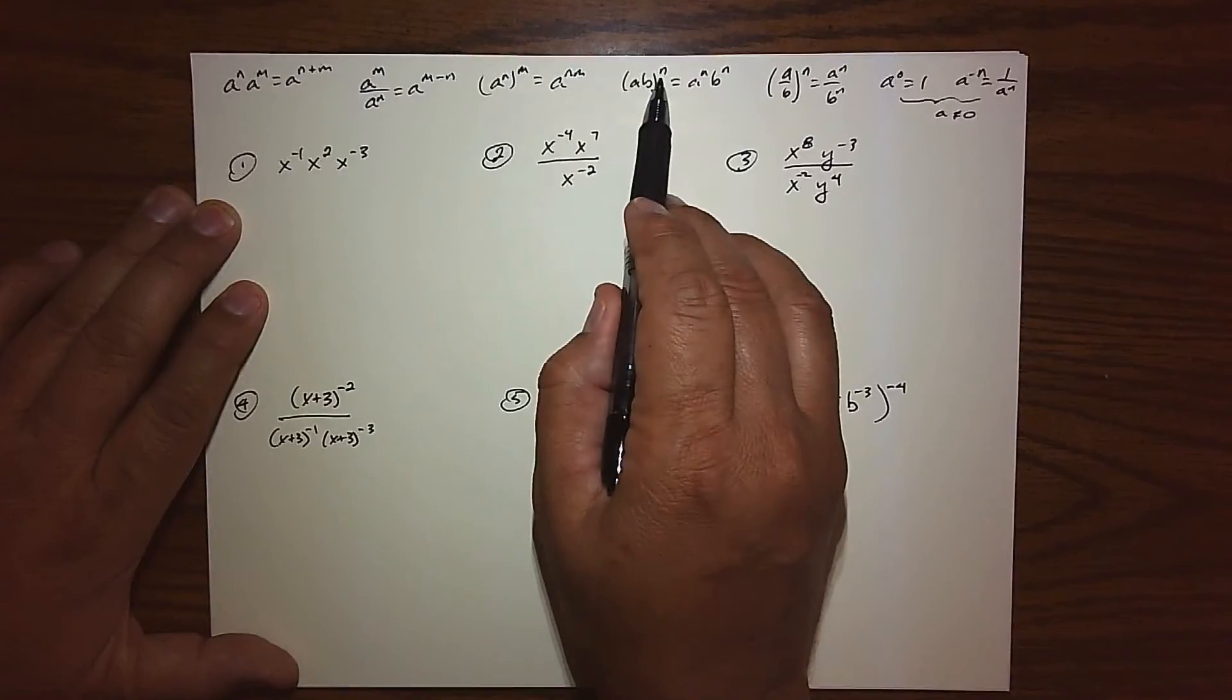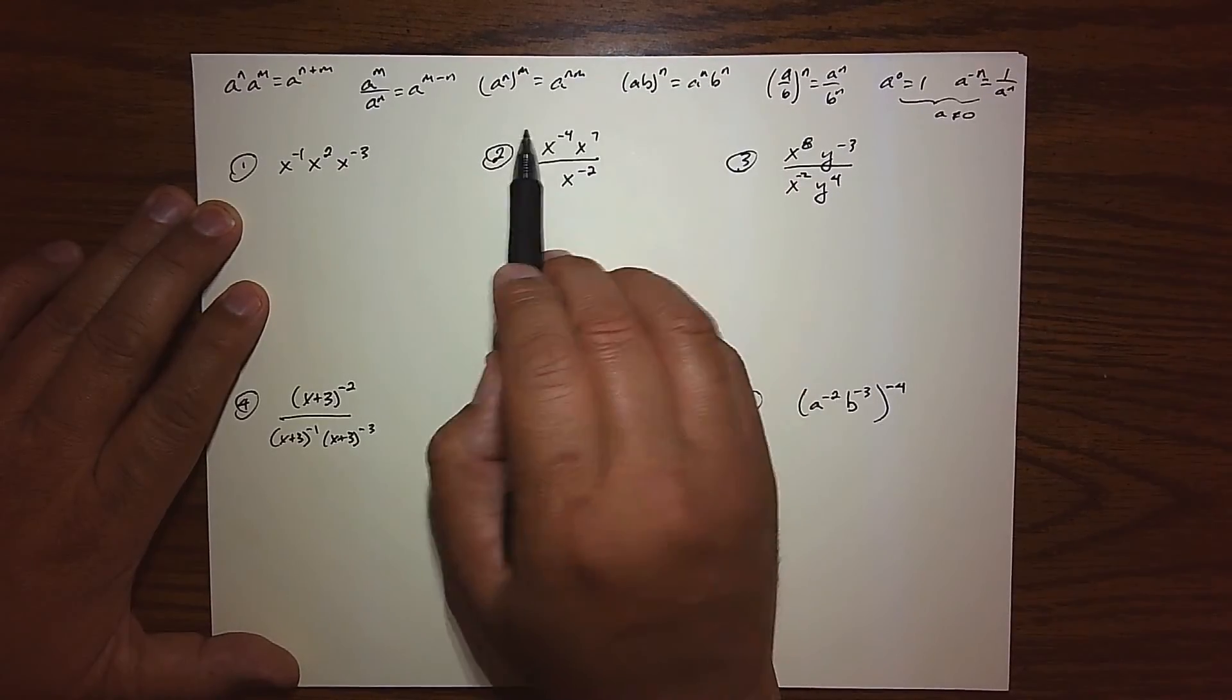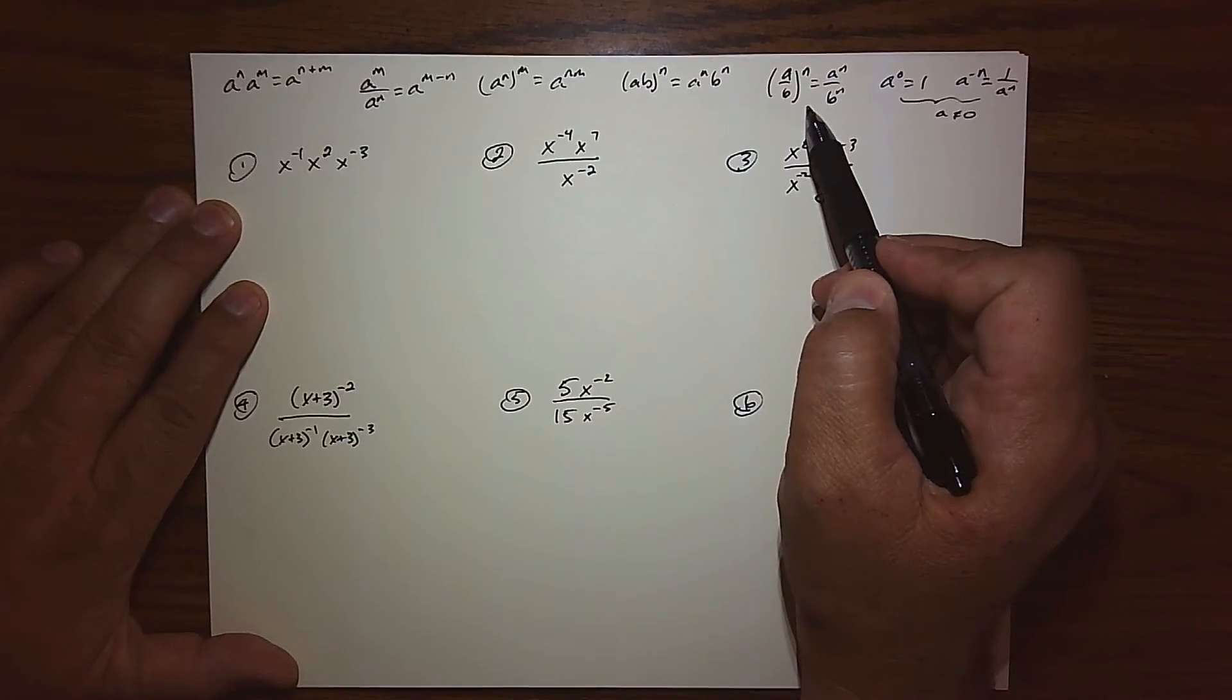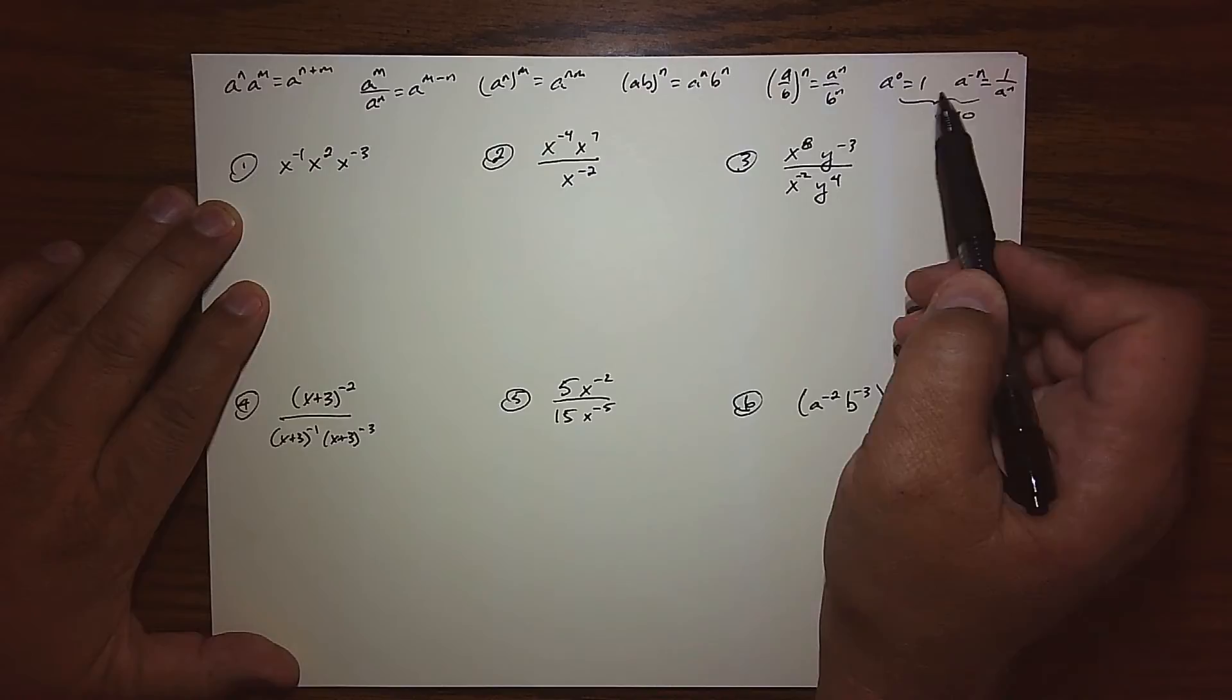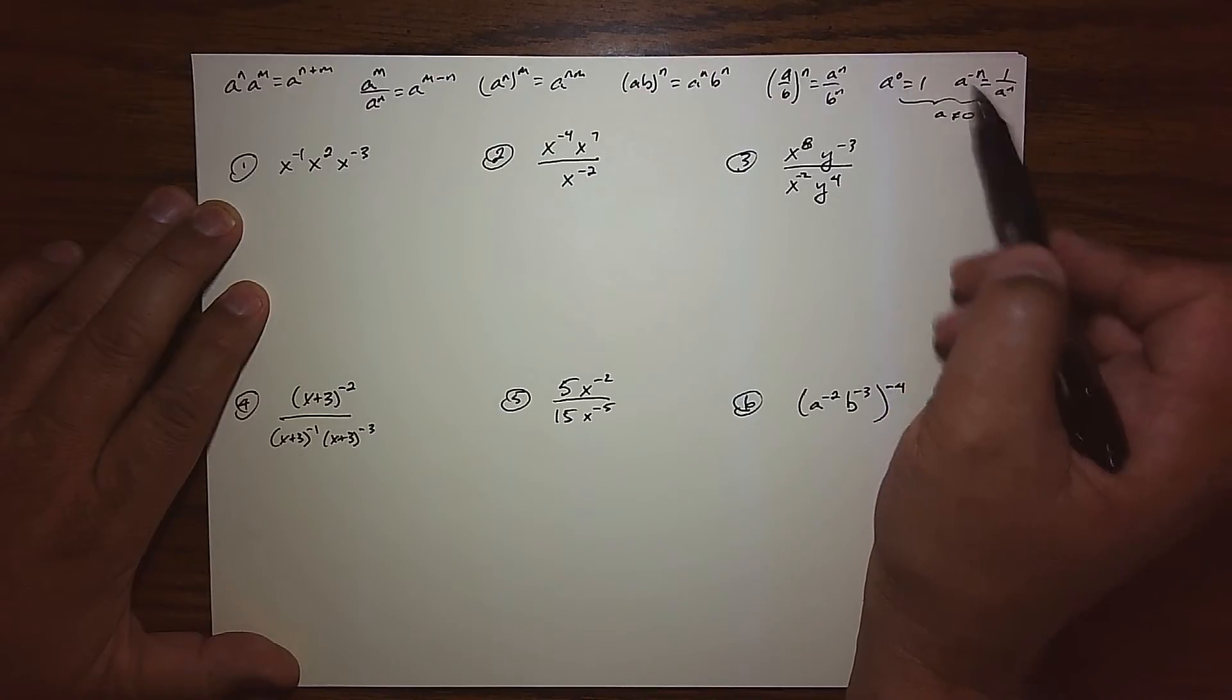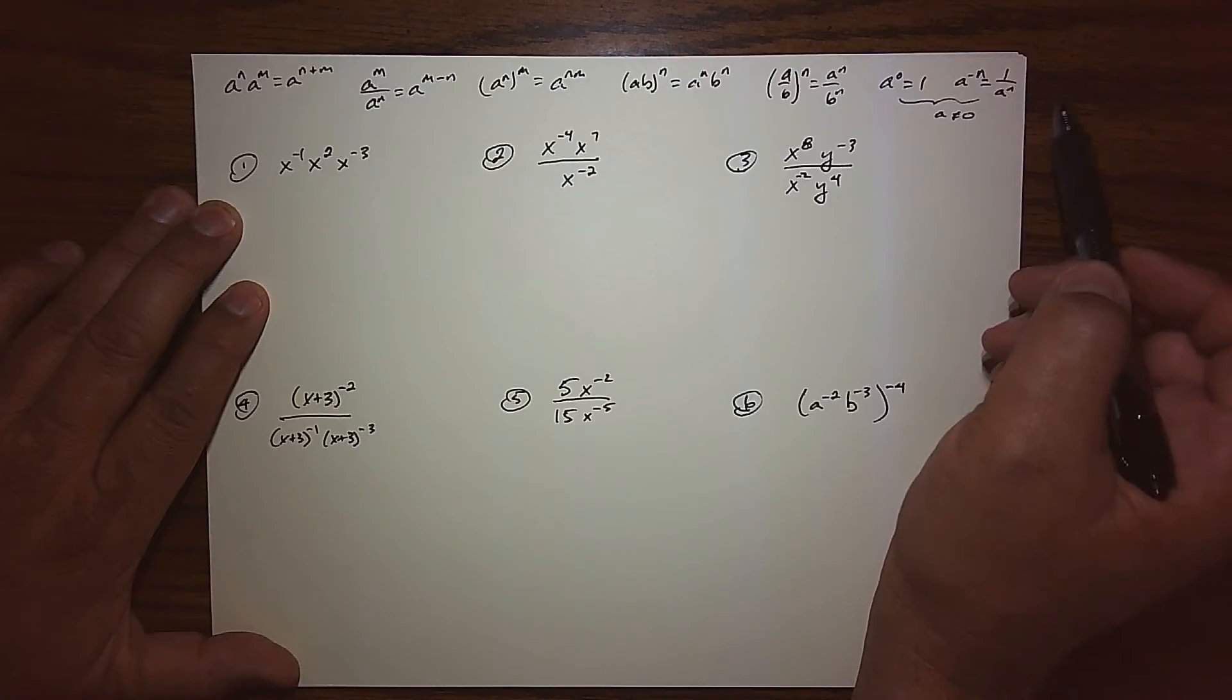The power of a product when we distribute the exponent to each factor, the power of a quotient where we apply it to both upstairs and downstairs, what it means to raise something to the zero power, and negative exponents. We just flip them on their head, it's kind of like a reciprocal.